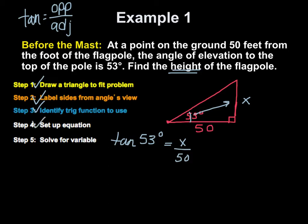Next, I'm going to solve for the variable. So, to solve for this variable, I've got X divided by 50 at this time, and I'm going to multiply both sides by 50 to get that 50 to cancel. So, on the right-hand side, it does cancel, leaving me with X. And then the left-hand side is 50 times the tangent of 53.